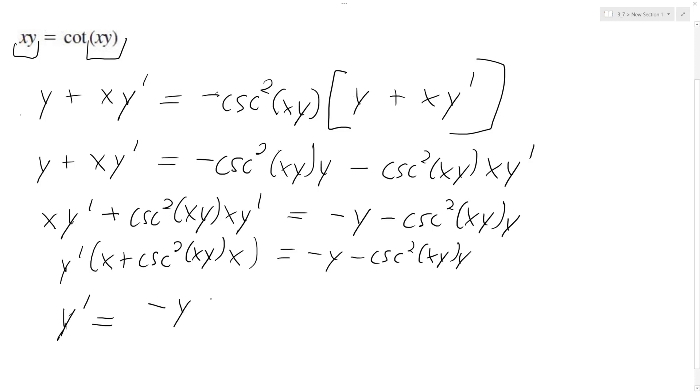I mean, you can factor out a negative, you can factor out a negative y or a y out of this, and then like an x out of the other thing, but I'll just leave it. So minus y, then cosecant squared xy times y, all over x plus cosecant squared xy times x.